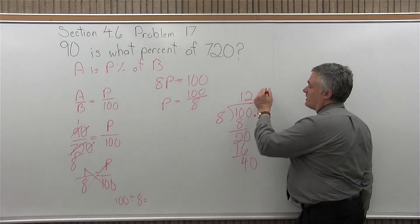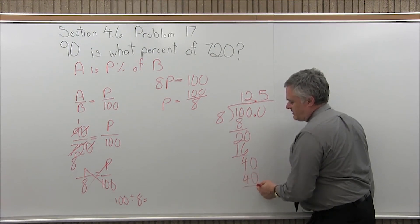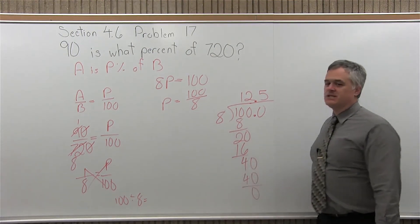So, 8 times something is 40. Well, times 5 fits perfectly. 5 times 8 is 40. 40 minus 40. Remainder is 0. So, it fit in exactly.